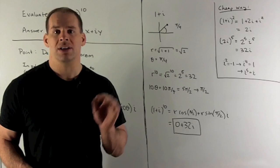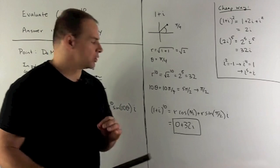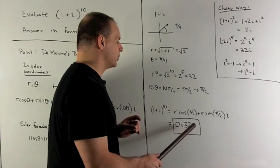We're going to get 32 cosine of pi halves plus 32 sine of pi halves times i. Cosine of pi halves is 0. Sine of pi halves is 1. So we're going to get 0 plus 32i.